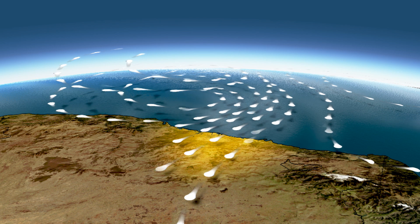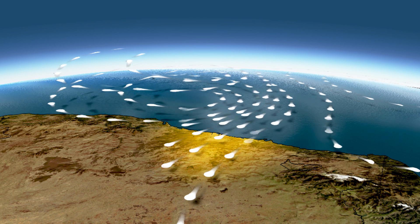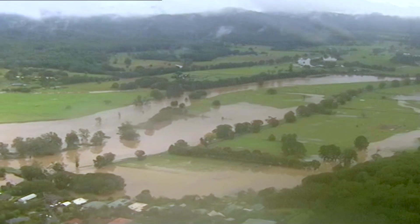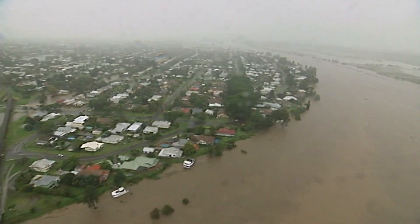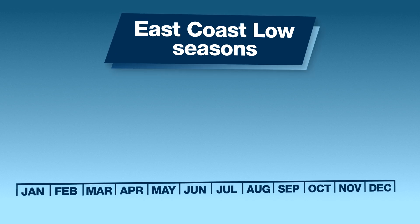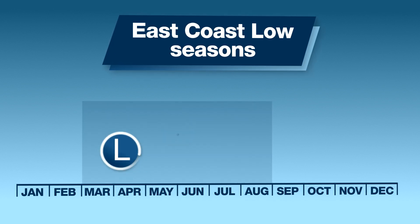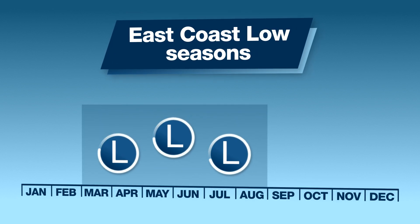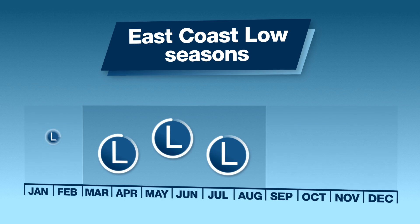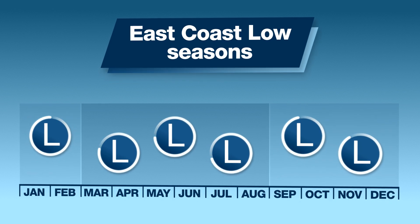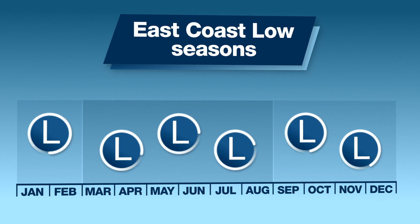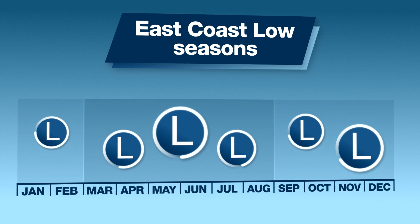These wild winds sweep in off the coastline bringing moisture that flows up and over the Great Dividing Range, releasing heavy rainfall — and that's where the flooding concern can come from. The peak season for development is the late autumn and winter period, however East Coast lows can occur all year round, and the eastern seaboard typically sees multiple events every year ranging in intensity and severity.